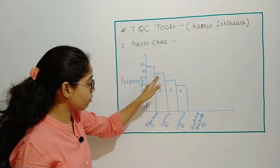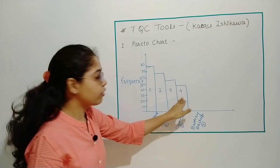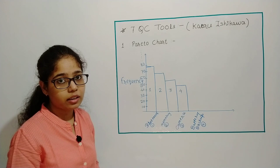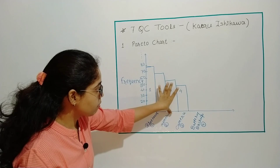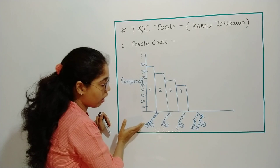In Pareto chart, what we have to do is first arrange the defects with the highest sequence in these bars. This is your basically Pareto chart in which you have to take your defects on x-axis and frequencies on y-axis.